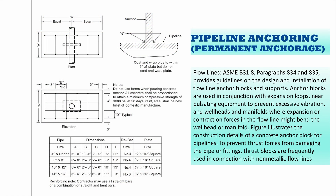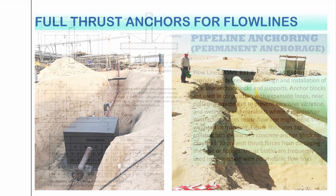Here is some pipeline anchoring — permanent anchorage — from an engineering drawing. For flow lines, ASME B31.8, paragraphs 834 and 835, provides guidelines on the design and installation of flow line anchor blocks and supports. Anchor blocks are used in conjunction with expansion loops near pulsating equipment to prevent excessive vibration, and at wellheads and manifolds where expansion or contraction forces in the flow line might bend the wellhead or manifold. The figure on the left illustrates construction details of a concrete anchor block for pipelines to prevent thrust forces from damaging the pipe or fittings. Thrust blocks are frequently used in connection with non-metallic flow lines.